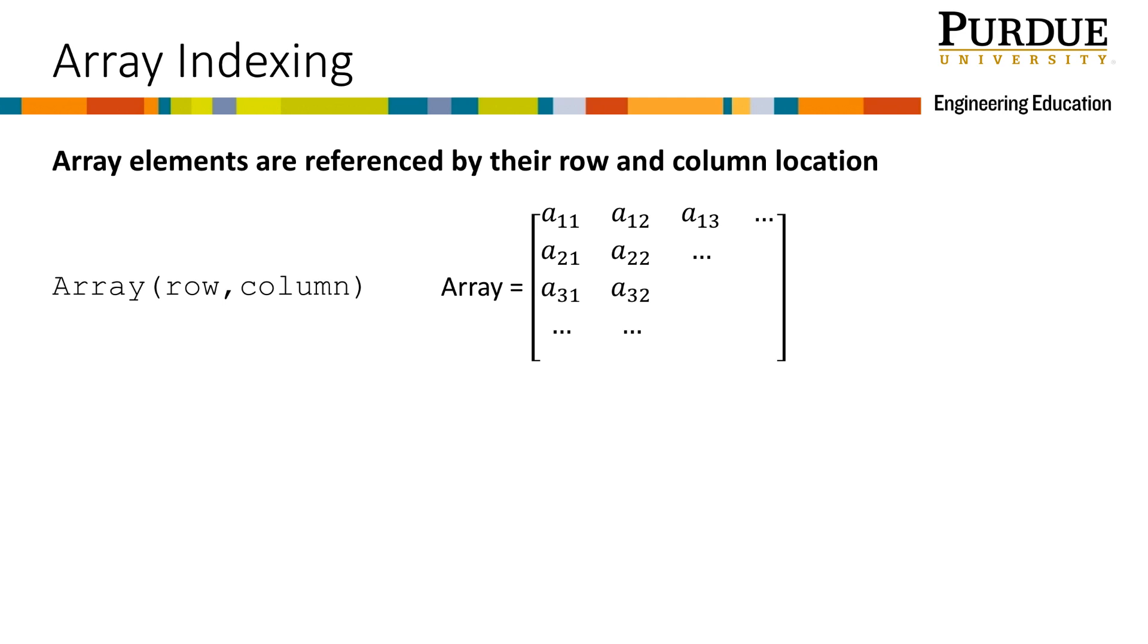So what is array indexing? Let's look at a theoretical array. Notice how the elements are subscripted with their row and column number. Notice that the row number is first and the column number is second, just as when identifying the dimensions of a matrix. When you want to use or refer to any of the values in an array, you need to make reference to the row and column location of the values of interest.